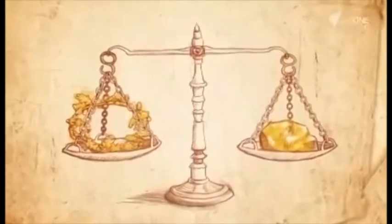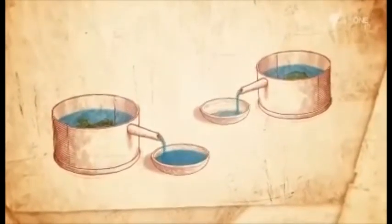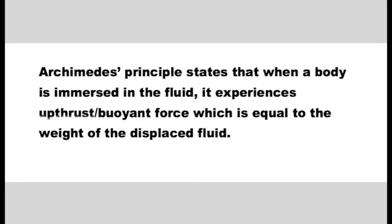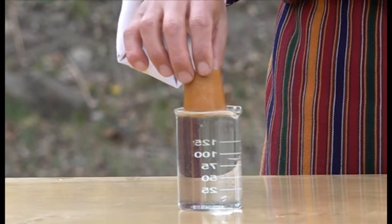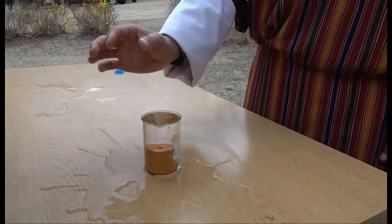This helped him determine the density of the crown and compare it with that of pure gold, where density equals mass over volume. This further led him to formulate a scientific theory called Archimedes' principle, which states that when a body is submerged in a fluid — liquid or gas — it experiences an upthrust equal to the weight of the fluid displaced by the body. In our earlier demo, if I had collected the spilled water and measured its weight, the upthrust experienced by the rubber cork would equal the weight of that spilled water.